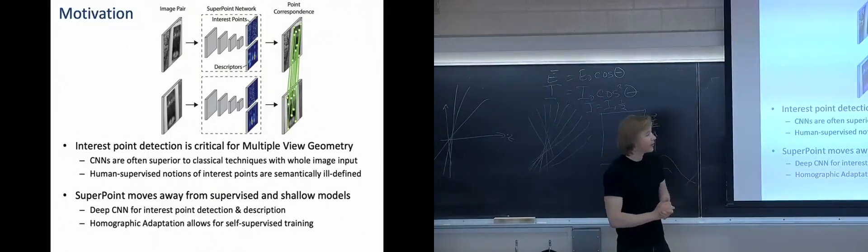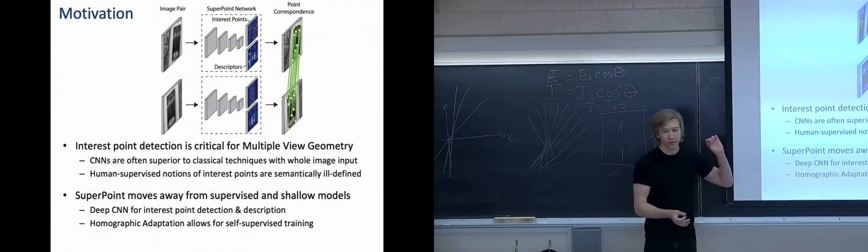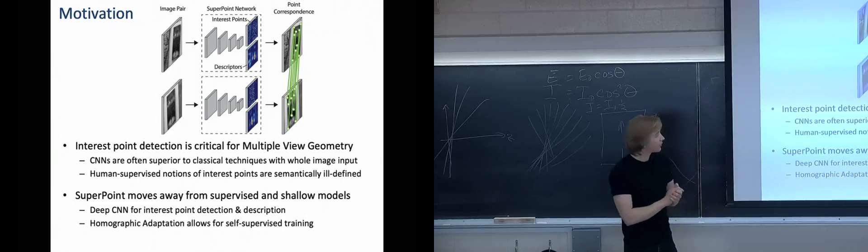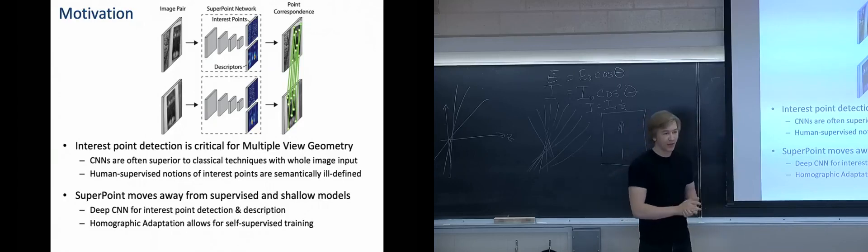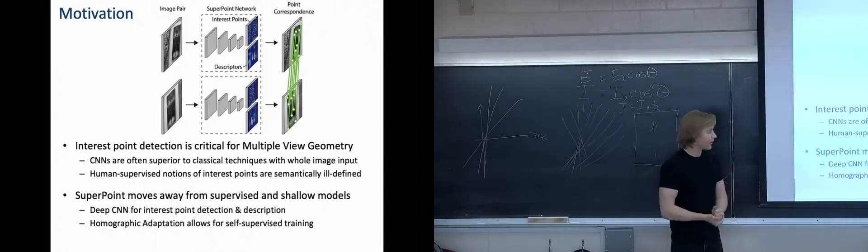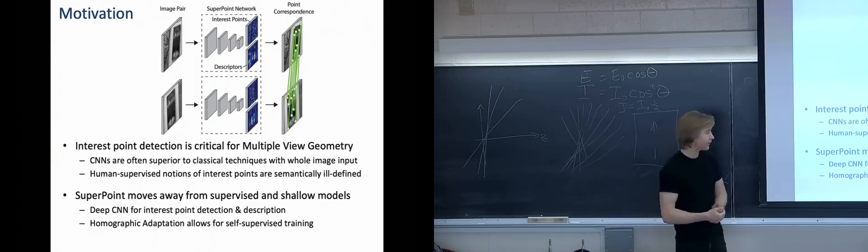So the motivation for SuperPoint: it's an interest point detection model which is critical for multiple view geometry. You want to find points that correspond between your two views of the same scene so that you can do structure from motion and other tasks. The classical techniques for this that we have are like SIFT. The problem with those however is that we would rather be able to use the curated datasets of today, COCO and ImageNet, to be able to learn better representations and achieve better performance than those classical techniques.